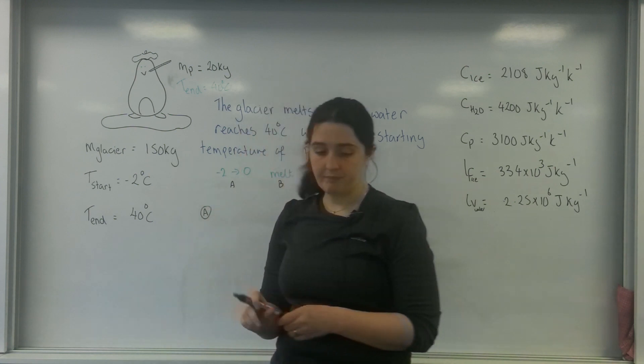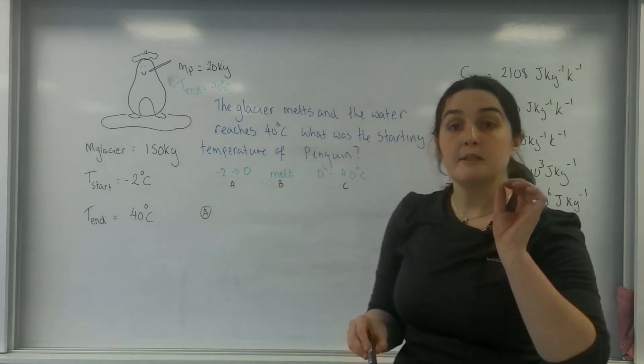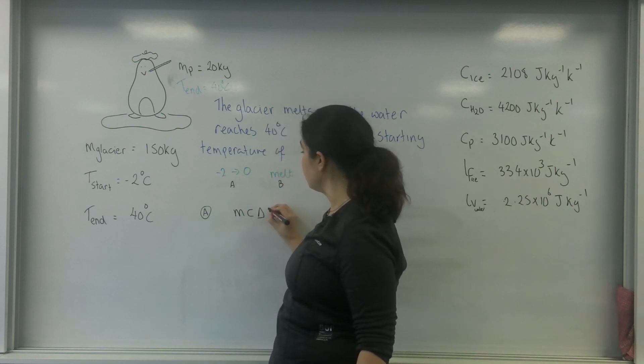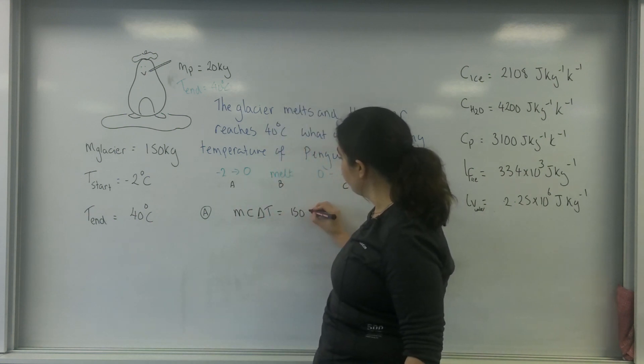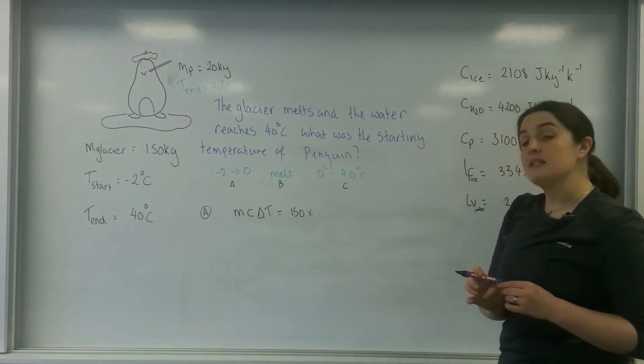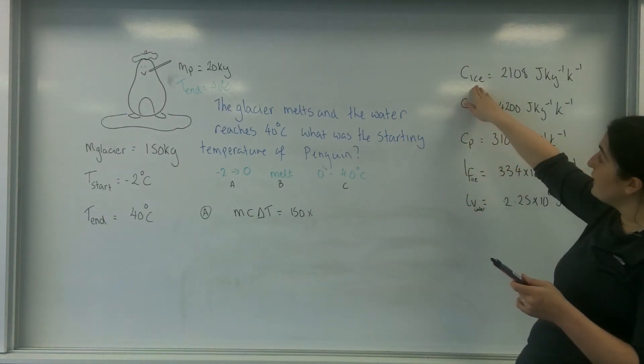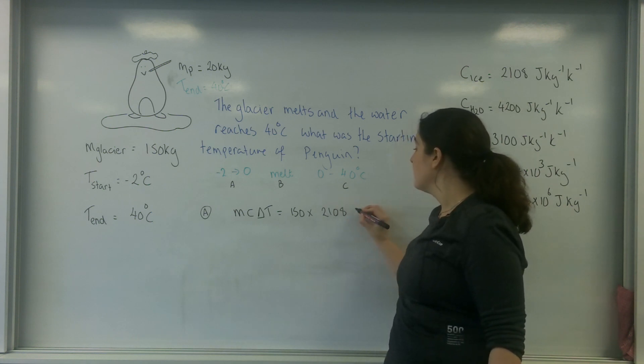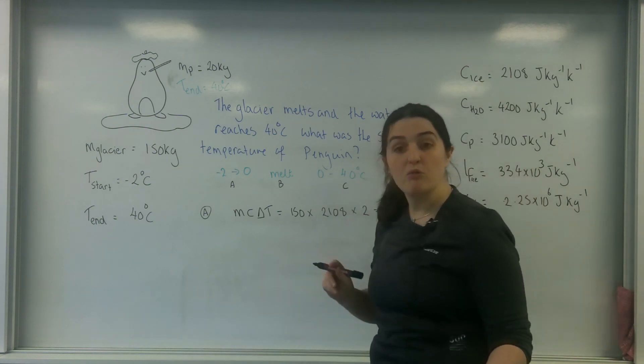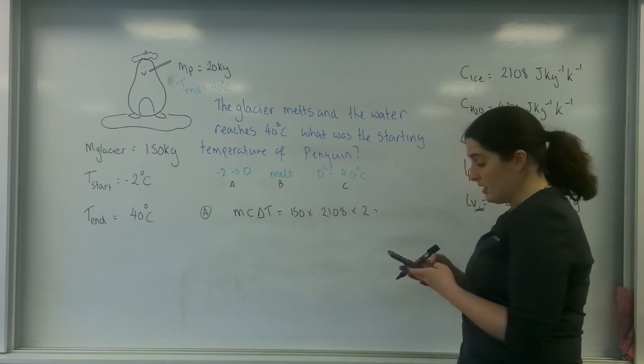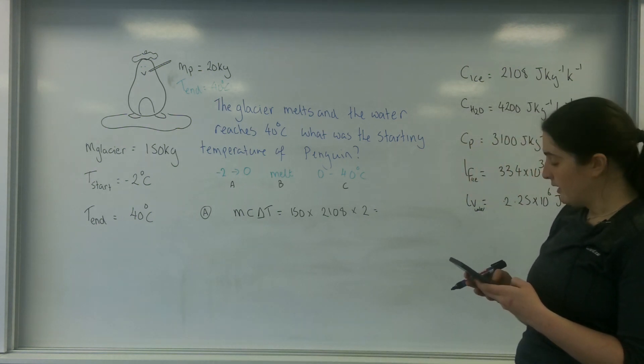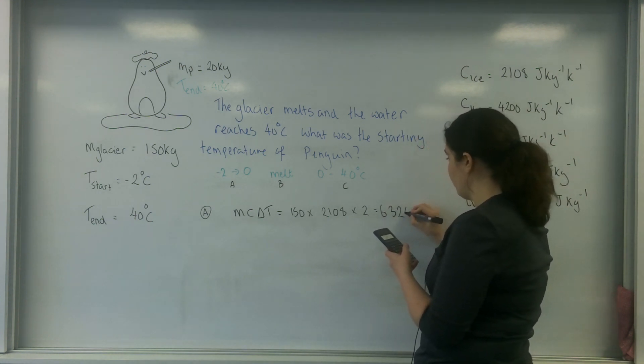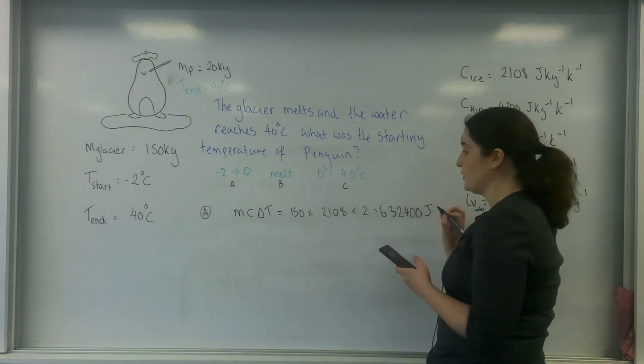So let's have a go. Section A. So this is specific heat. So I'm going to use the formula MC delta T. So that's going to be 150 times by, this is ice, so it's going to use specific heat capacity of ice, which is 2108 times by 2. Not really increasing by much. So 150 times by 2108 times by 2, and that is going to be 632,400 joules there.